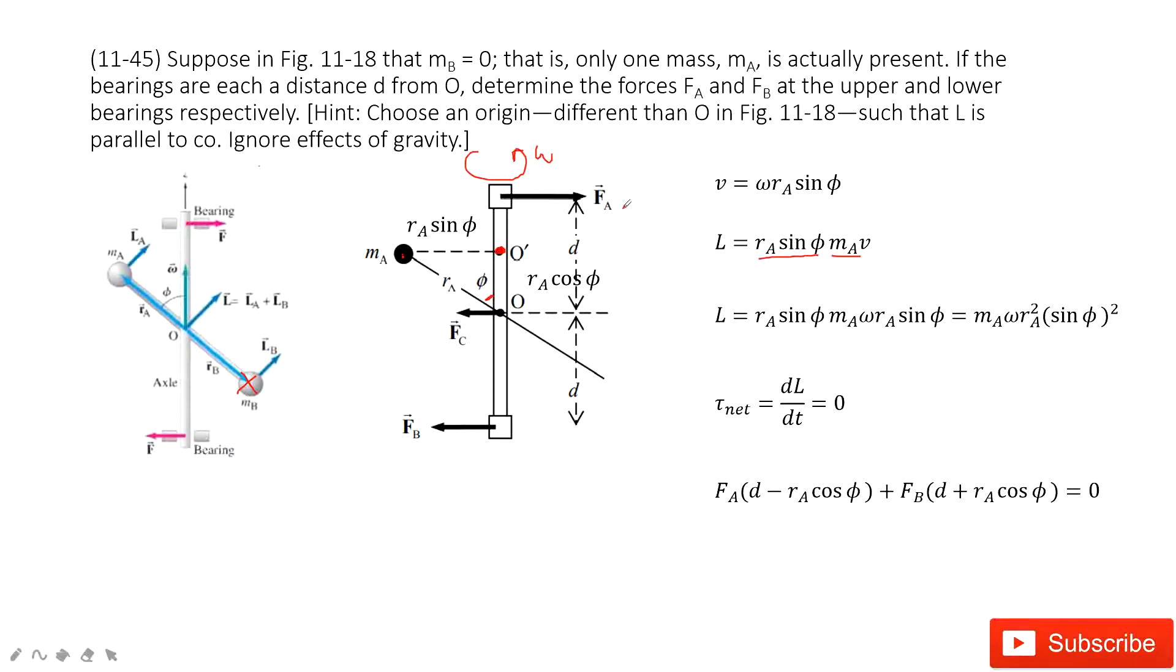So net torque is zero. Since the net torque is zero, it becomes easy. You can see now we consider we have three forces A, B, C. Now the net torque for this system, first we consider object A times the distance from the rotation axis. So this length should be d minus this side, d minus rA cos φ.